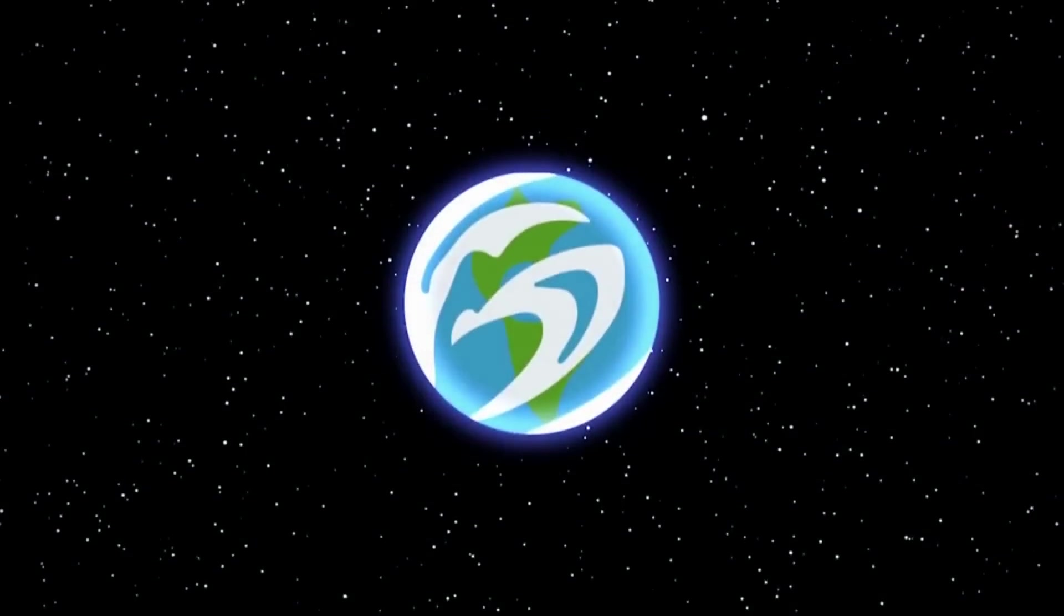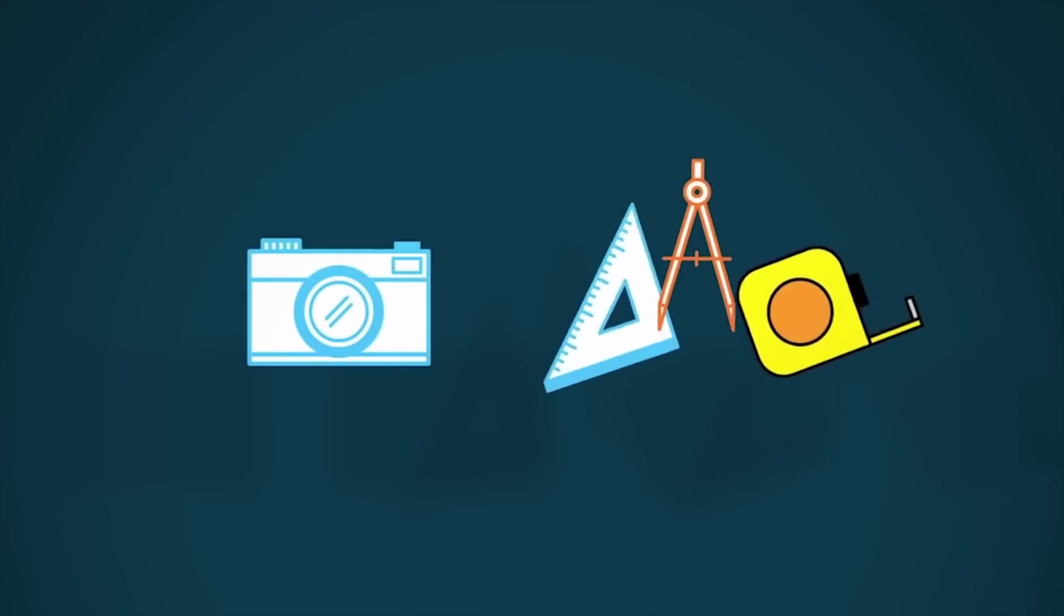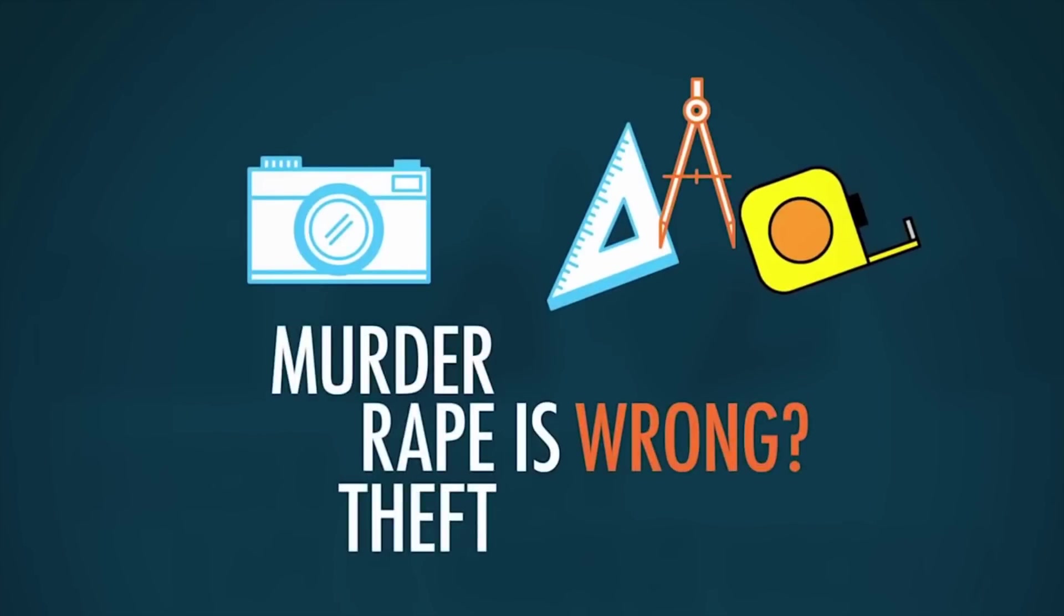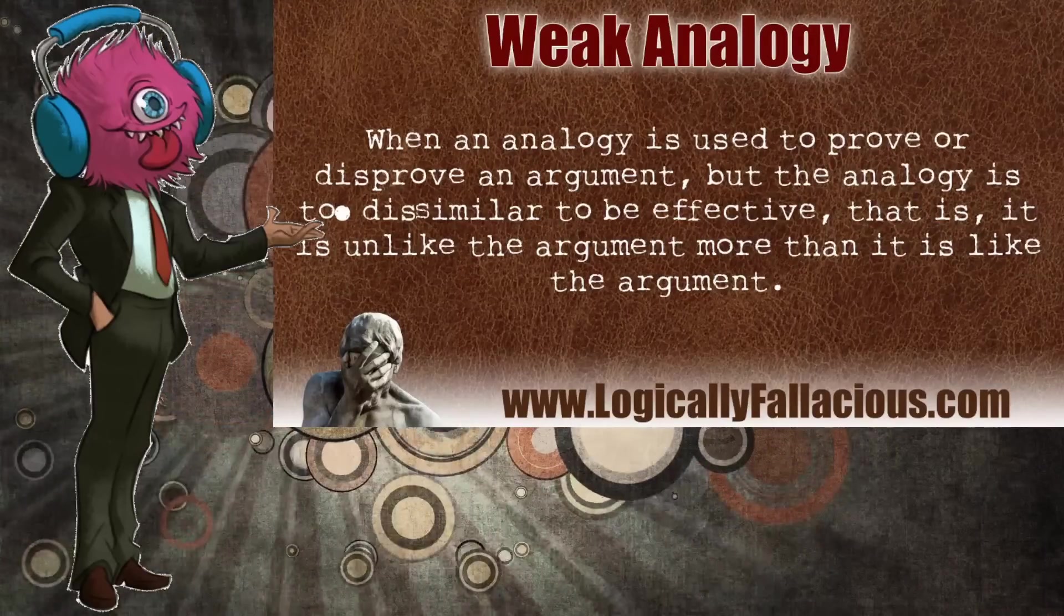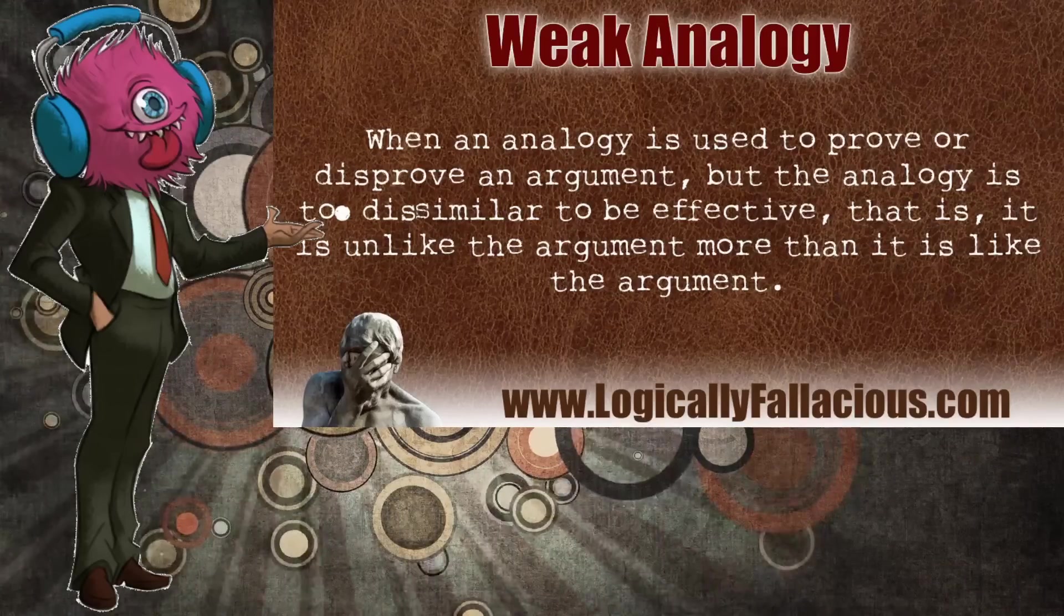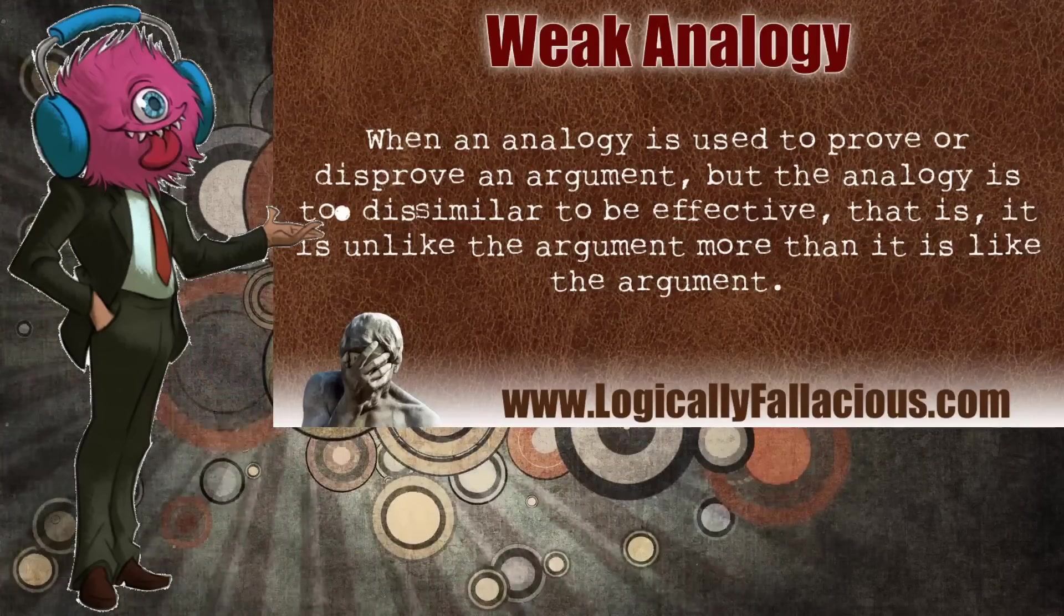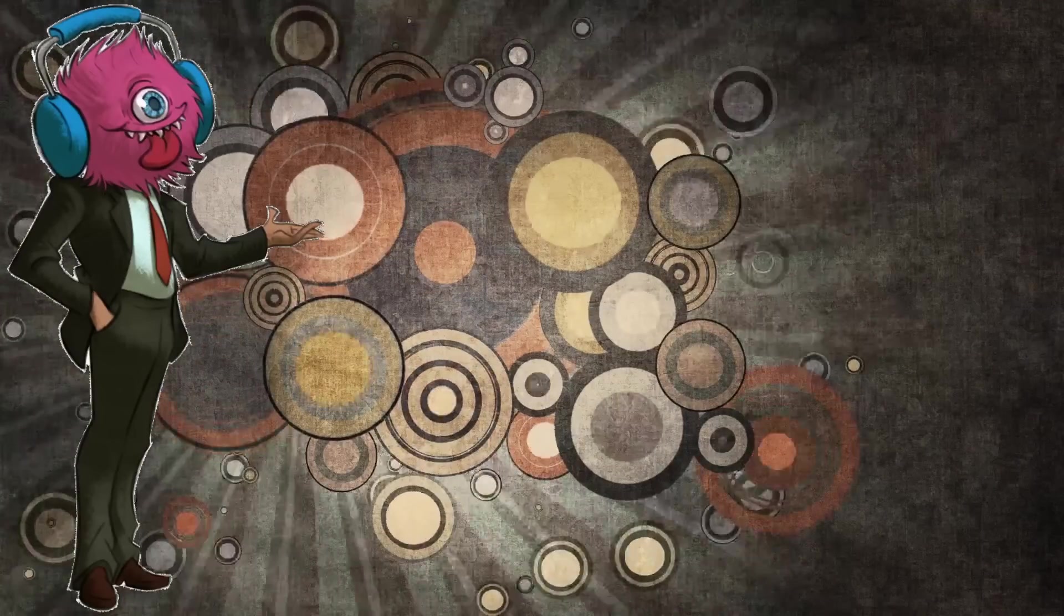If I asked you how you know that the earth is round, you would show me photographs from outer space or offer me measurable data. But what photographs could you show? What measurements could you provide that prove that murder or theft is wrong? The fact is, you can't. This is a weak analogy fallacy. When an analogy is used to prove or disprove an argument, but the analogy is too dissimilar to be effective, you can't compare the shape of the earth with the nature of right and wrong.